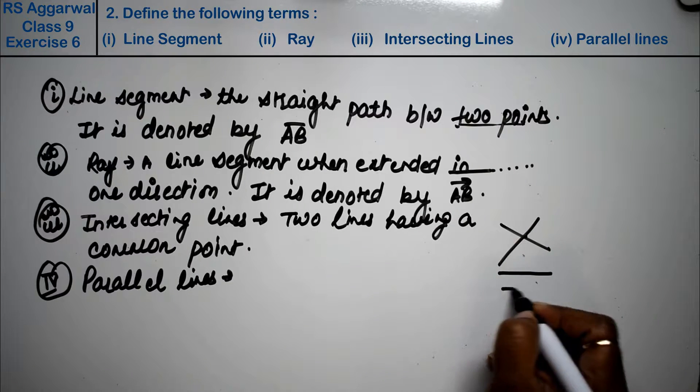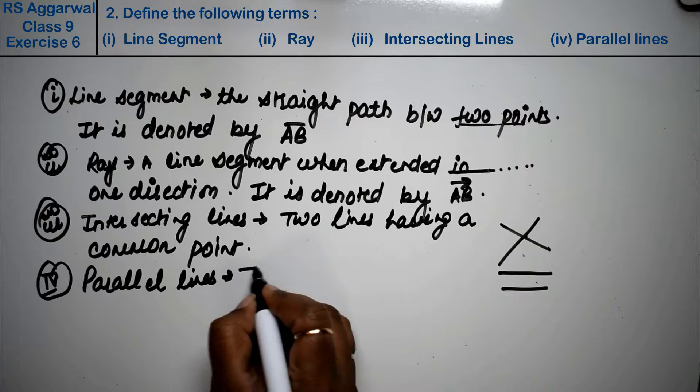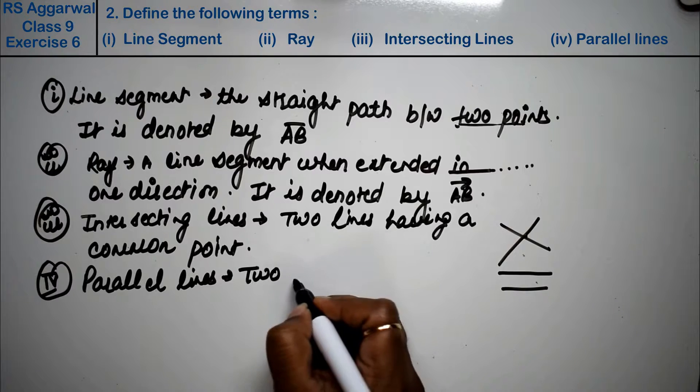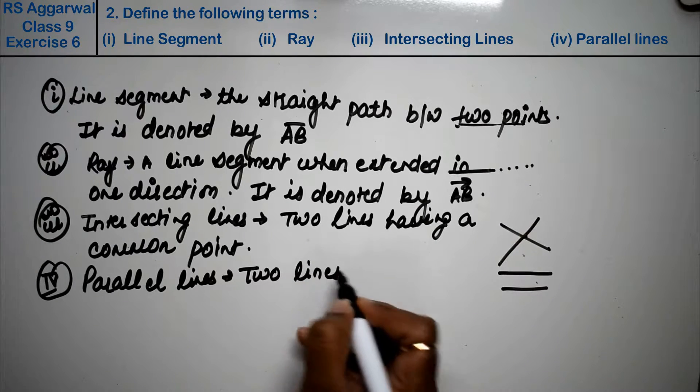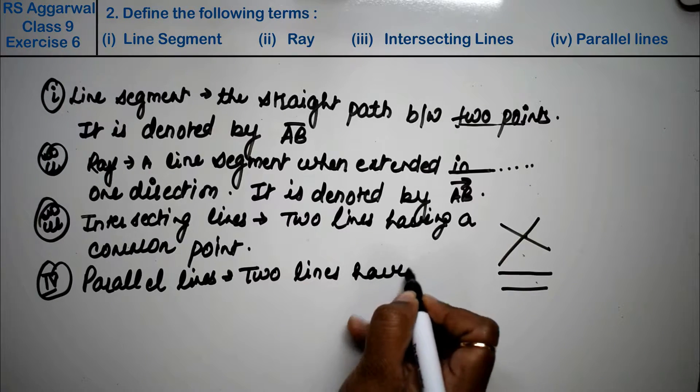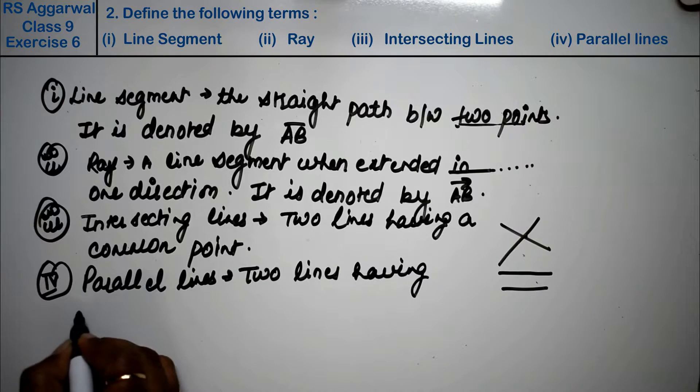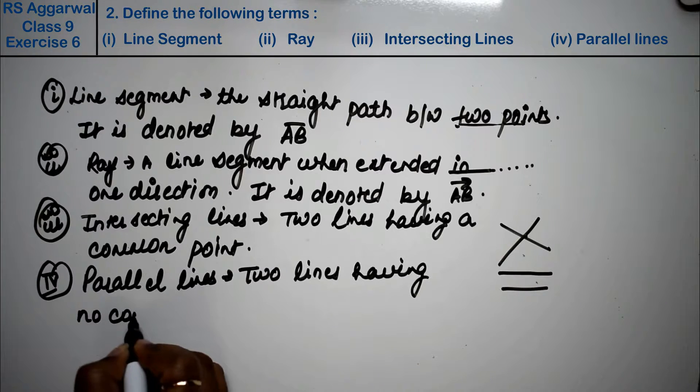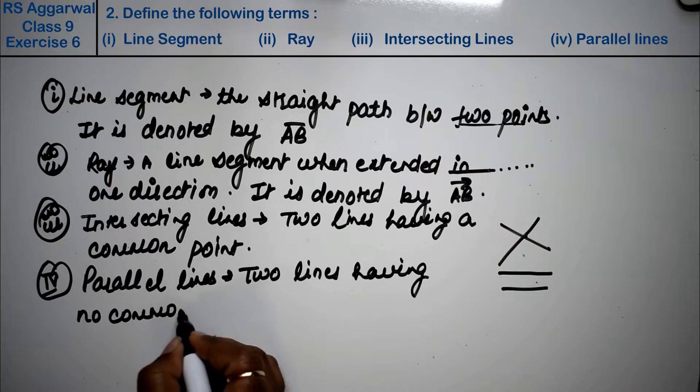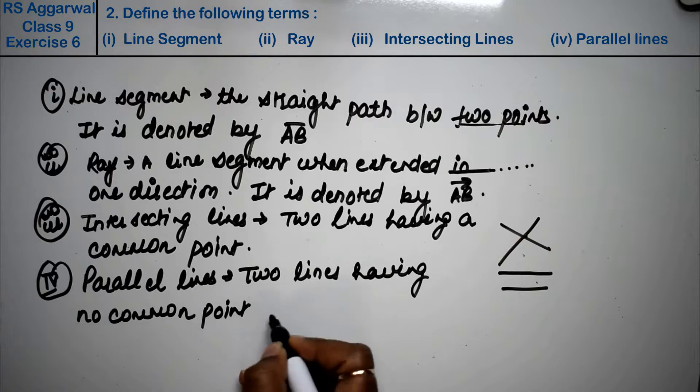Let's do fourth part. Fourth part is parallel lines. Kaonsi parallel lines hoti hain jinka koi common point nahin hota? Two lines having no common point.